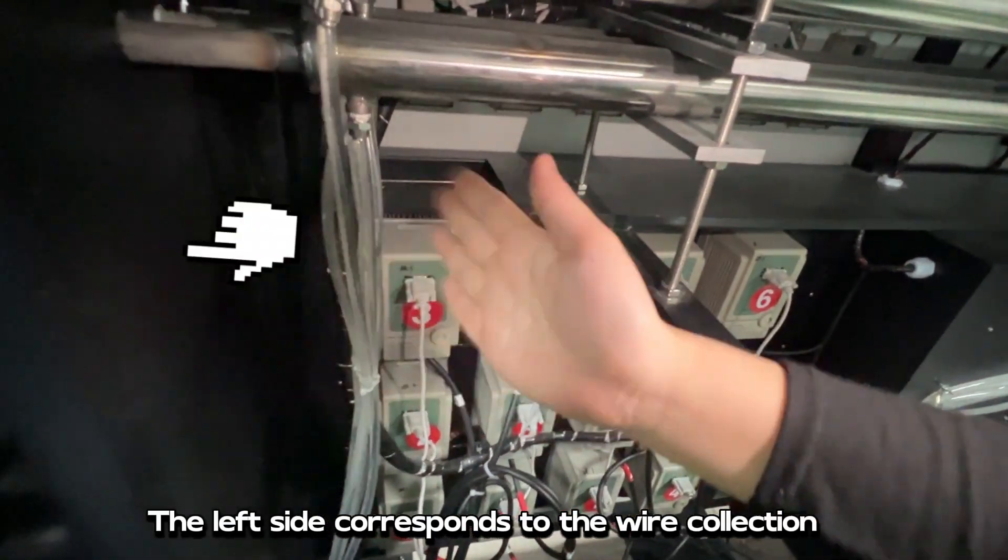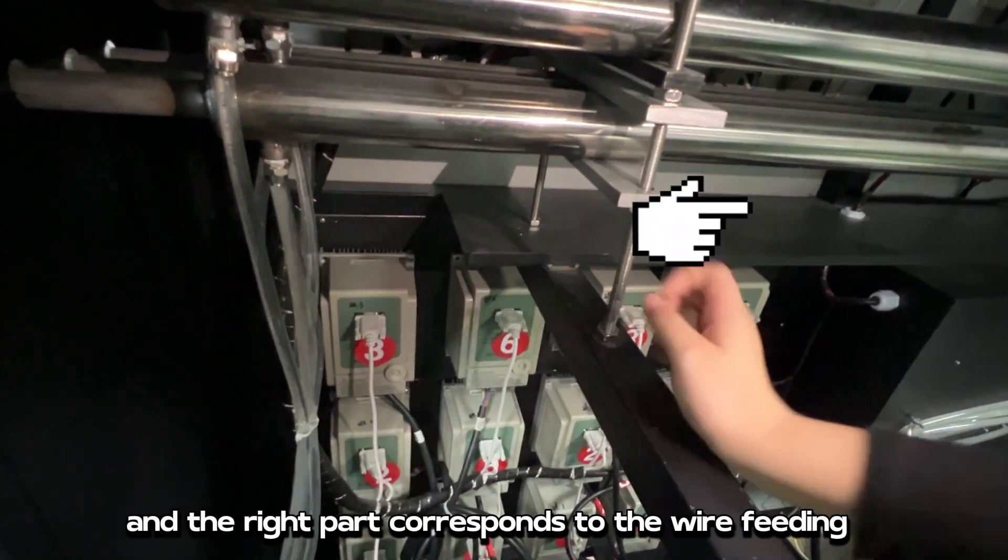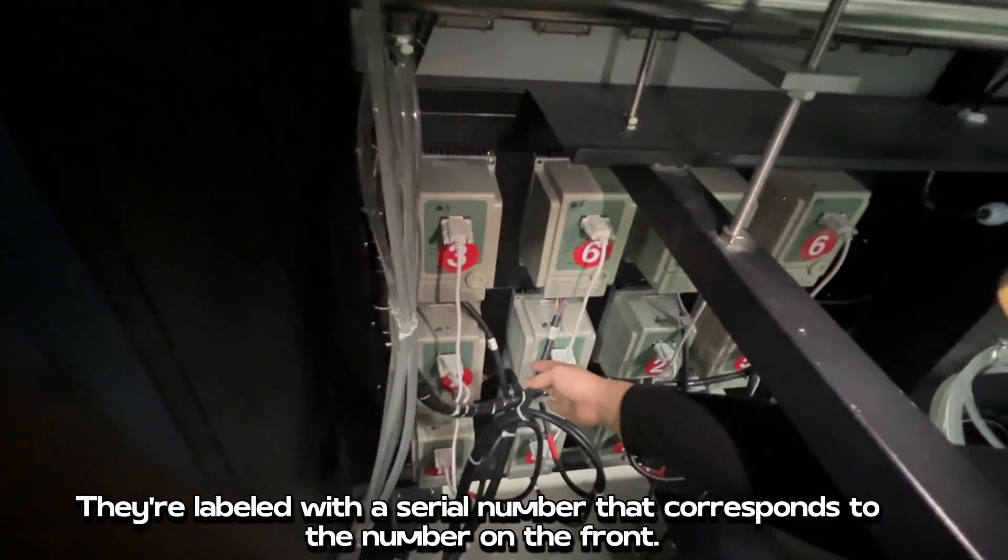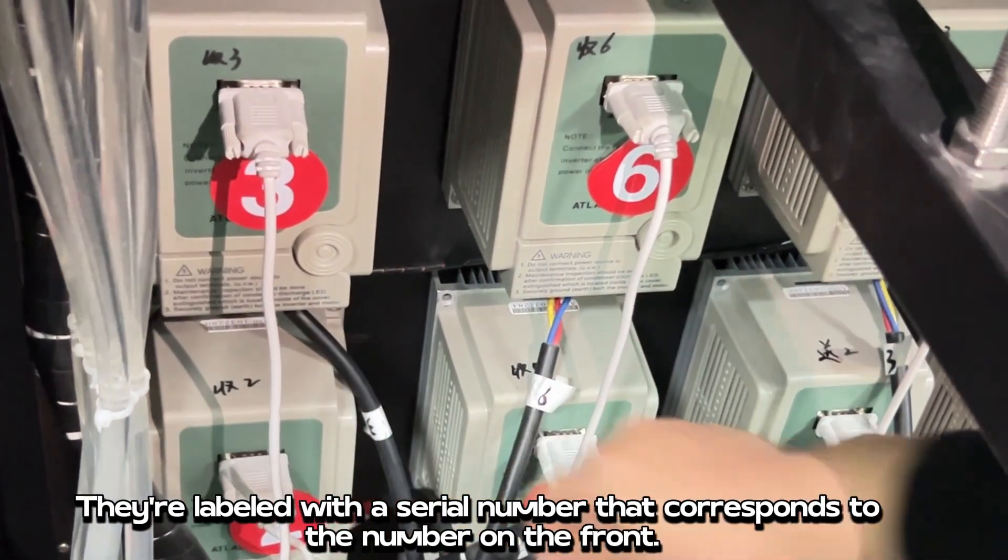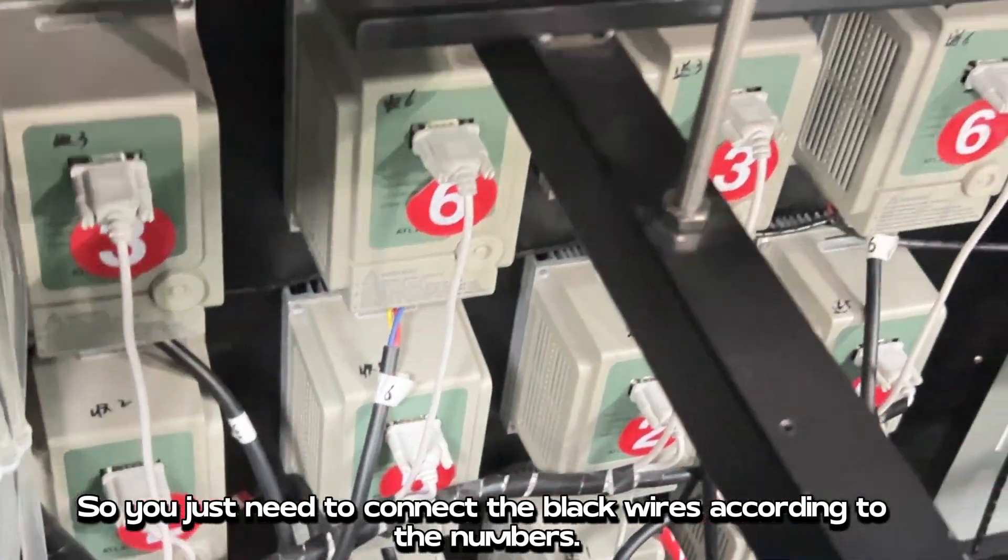The left side corresponds to the wire collection, and the right part corresponds to the wire feeding. They're labeled with a serial number that corresponds to the number on the front. So you just need to connect the black wires according to the numbers.